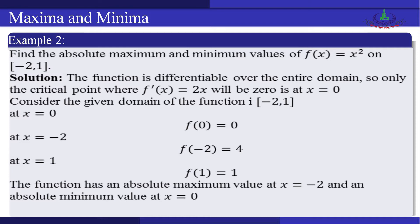Now we see another example: find the absolute maximum and minimum values for f(x) = x² on the interval [−2, 1]. The function is differentiable over the entire domain, so only the critical point where f′(x) = 2x = 0, giving x = 0, is considered. Evaluating: f(0) = 0, f(−2) = (−2)² = 4, f(1) = 1² = 1. Therefore, the function has an absolute maximum value at x = −2 and an absolute minimum value at x = 0.